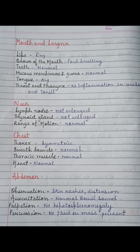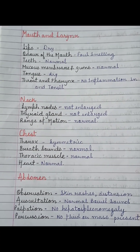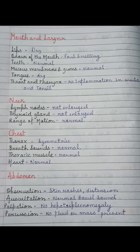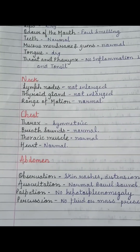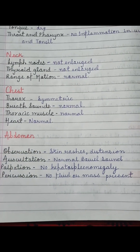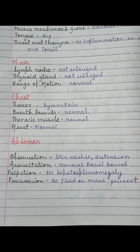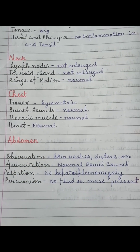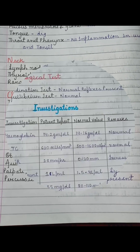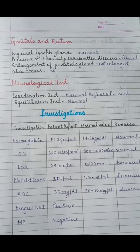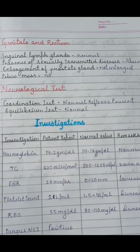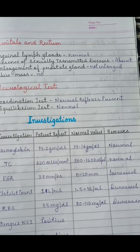Then we examine the mouth, larynx, neck, followed by chest. Then the abdomen, which we observe through auscultation, palpation, and percussion. We also examine the genitalia and rectum, and perform a neurological test as well.